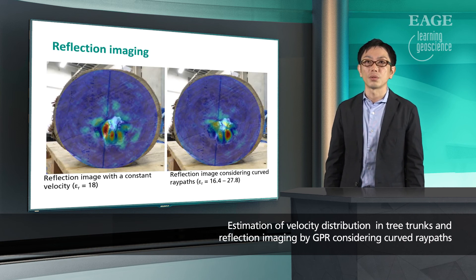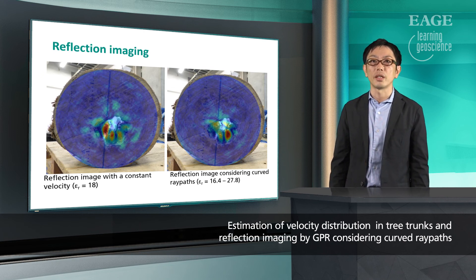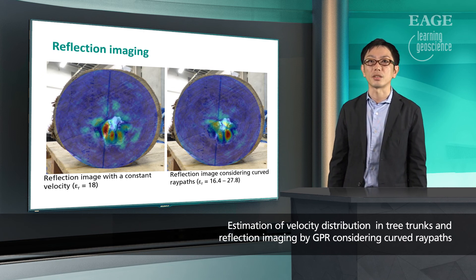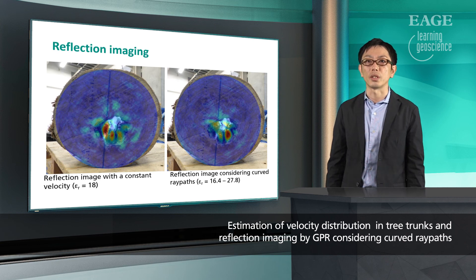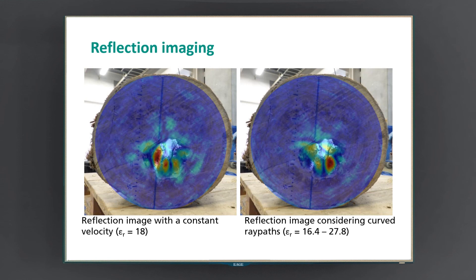Overlaying on the photo, we can see that the imaging with constant velocity has high-intensity spots not only at the hole. So we can say imaging considering velocity distribution and curved ray path gives the better results, more accurately reflecting the real structure.